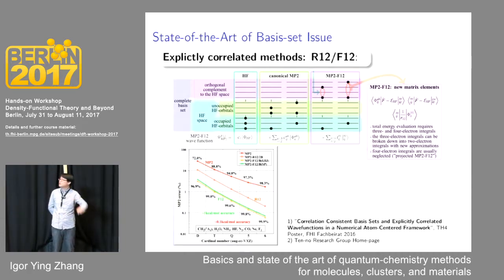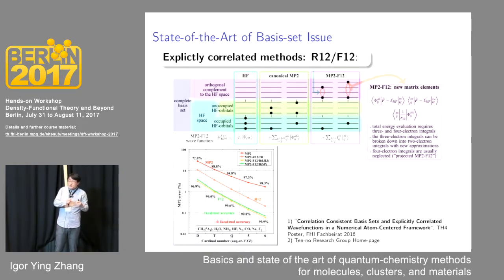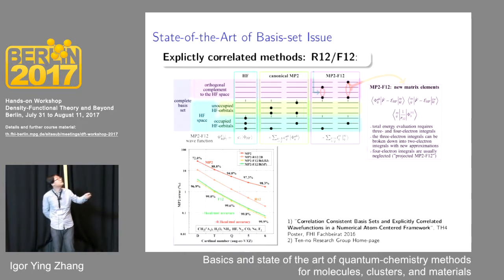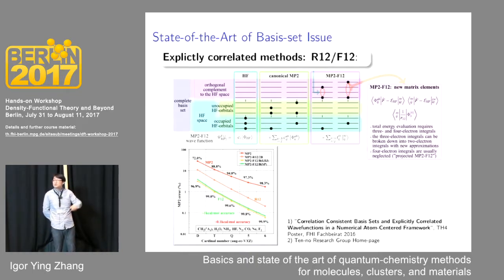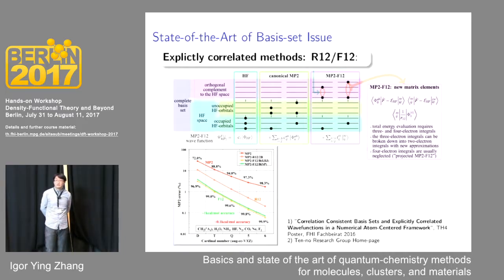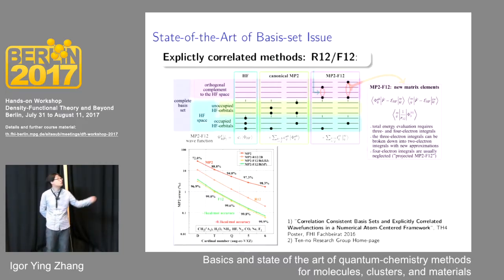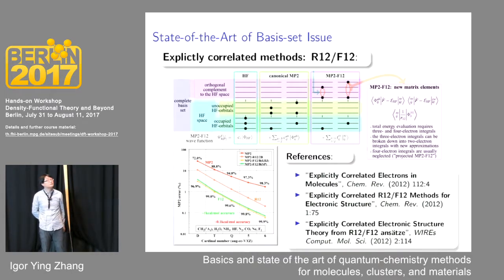Another way to address the basis set issue is the so-called explicitly correlated method R12/F12, which introduces the electron-electron distance in the CI expansion — meaning we introduce an orthogonal complement to the Hartree-Fock configuration space. Due to different ways to generalize this orthogonal complement and different ways to handle the additional integrals, there are many variants of R12/F12 approaches in quantum chemistry. If you are interested, you can take a look at a nice review paper in Chemical Reviews.